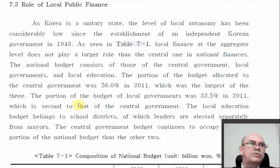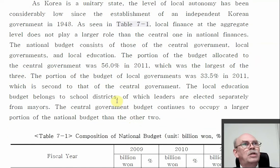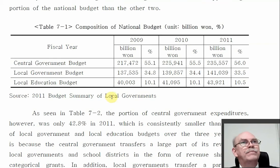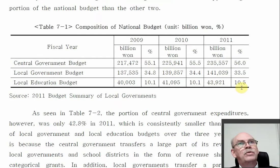In this book, it says the portion of the budget allocated to central government was 56% in 2011. Local governments was 33%, and local education less again. Here's the chart: central government, local government, local education — 55, 34, 10 in 2009; 2010; 2011. Not much change.